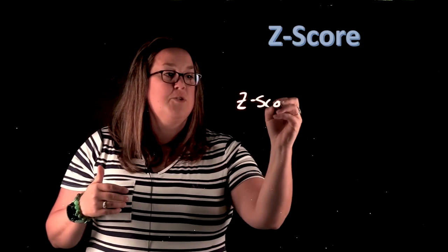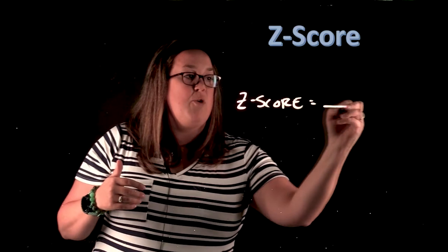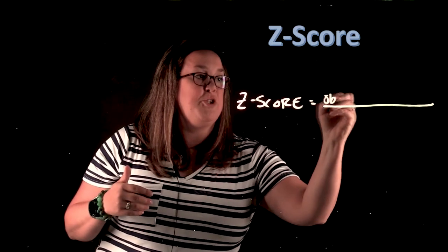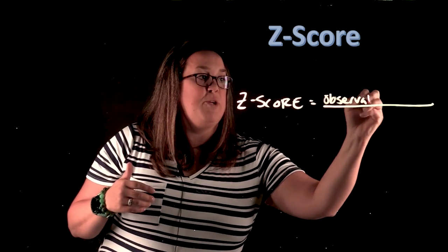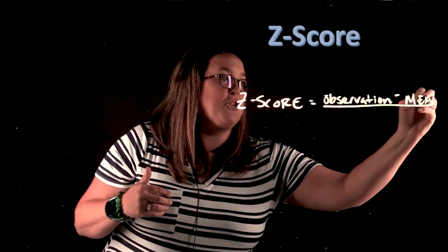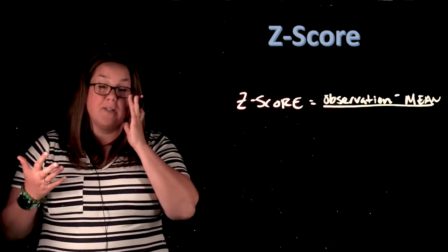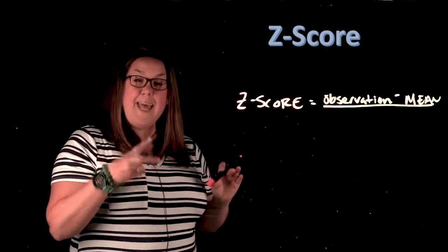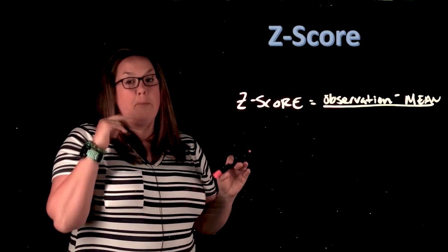So the z-score formula, I'll just write it out, it's going to take the observation, so the measurement or whatever that number is, and it's going to subtract the mean. So essentially what it's doing in that numerator is it's measuring both distance and direction from the mean.